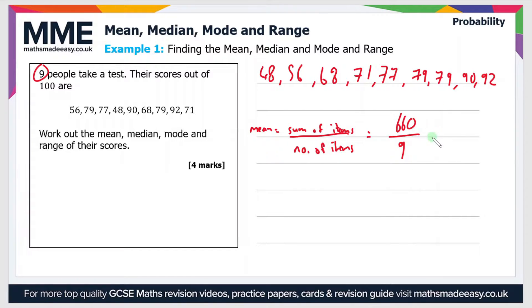So the calculation of the mean is 660 divided by 9 and if you do that you should get a value of 73.3 to 1 decimal place. Okay so moving on now we have the value of the median.